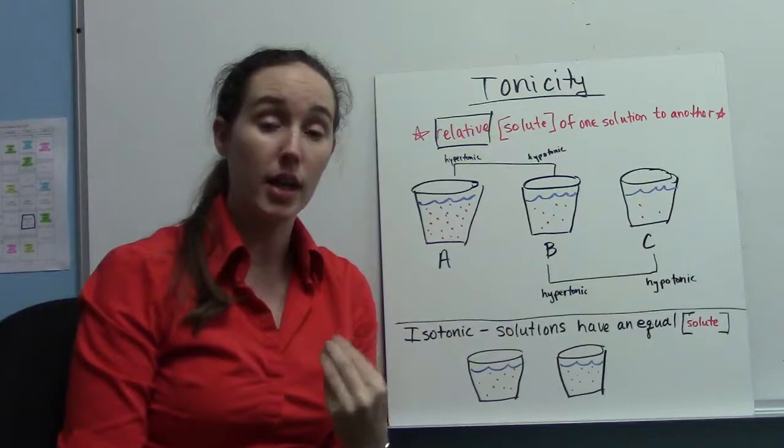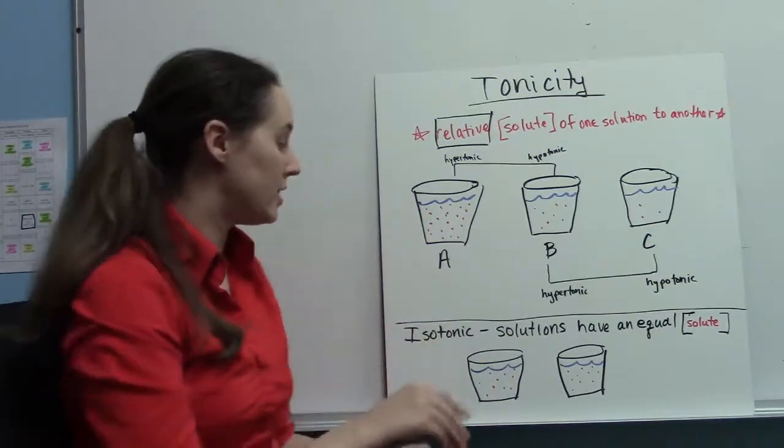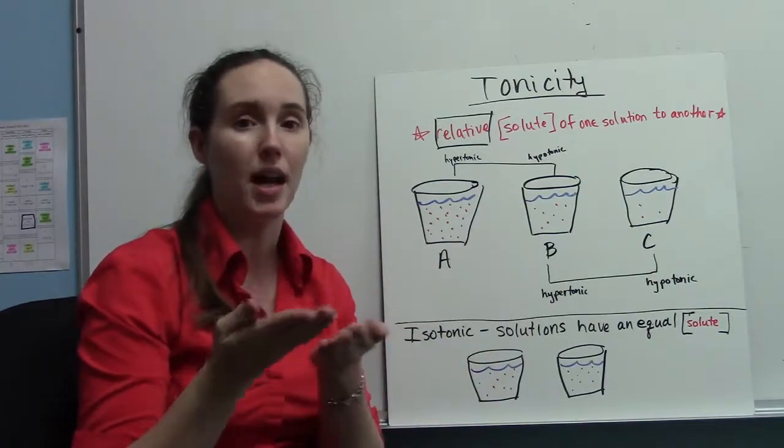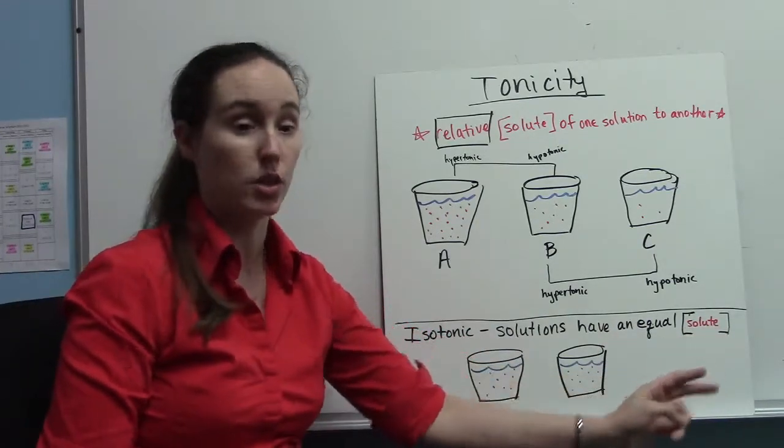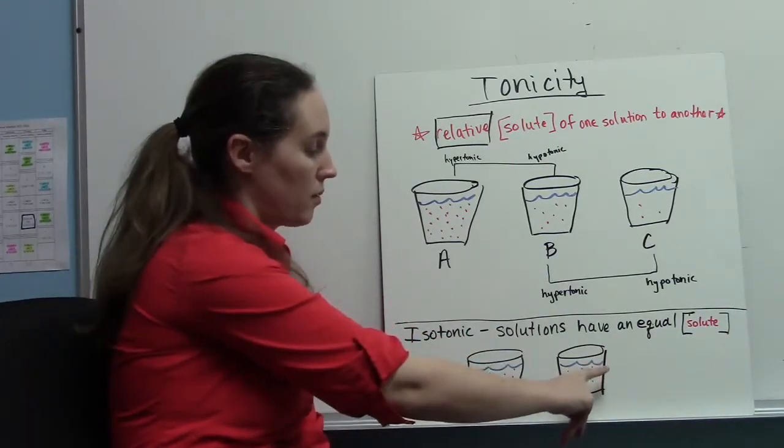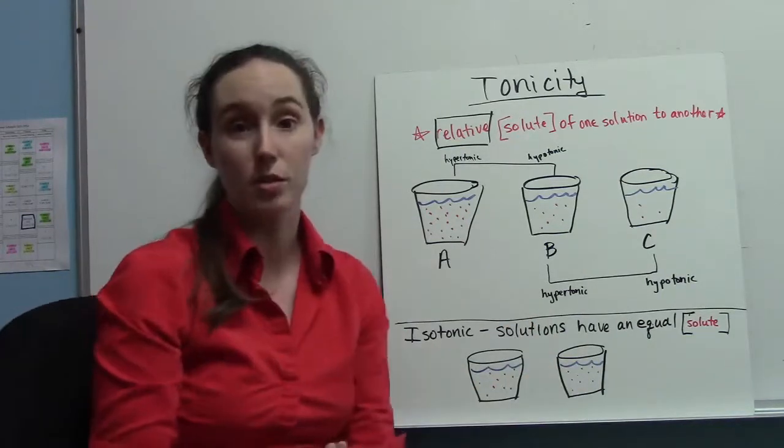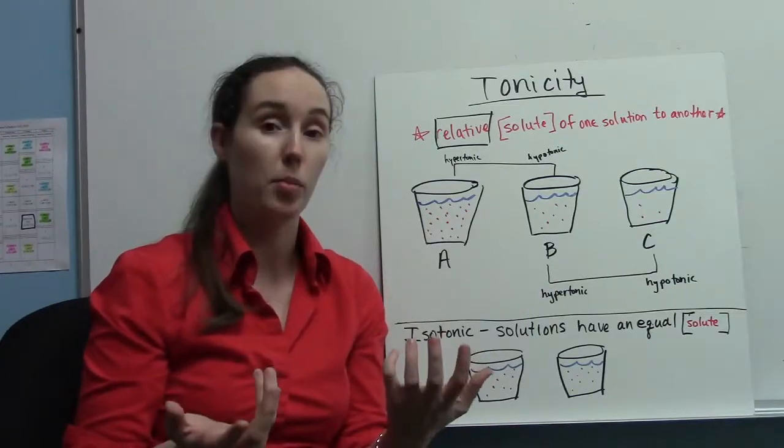Another important thing to know about tonicity is the idea of something being isotonic, or solutions being isotonic with each other. And that's where they're going to have an equal solute concentration in both solutions. So in this case, in both cups. But when we get to osmosis, you'll see it's on either side of the semipermeable membrane.